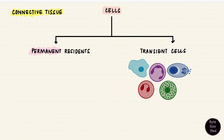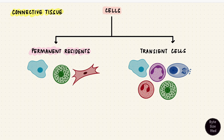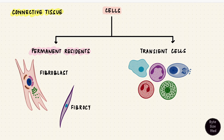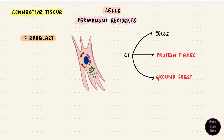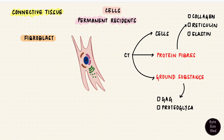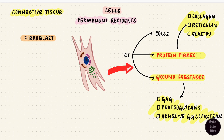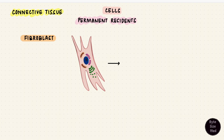The most common cells in connective tissue would be its permanent residents. Some cells like macrophages and even mast cells can be permanent, as well as stem cells, which give rise to all other cell types. The most commonly seen one is the fibroblast, and the second most common is the fibrocyte. The fibroblast synthesizes the other components of connective tissue — the protein fibers and ground substance. The protein fibers include collagen, reticulin, and elastin. The ground substance includes glycosaminoglycans, proteoglycans, and adhesive glycoproteins — all proteins synthesized by fibroblasts.